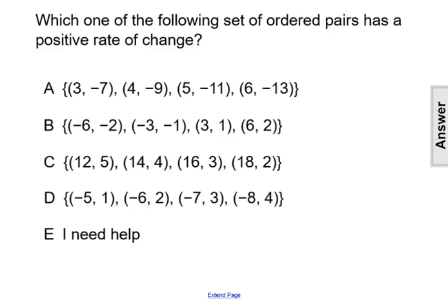Which one of the following sets of ordered pairs has a positive rate of change? To see the sign of the rate of change, we have to look at the movement of the x values and the y values within the pairs themselves.